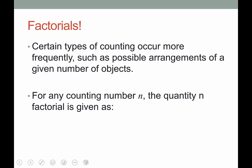So factorials. Certain types of counting occur more frequently, such as possible arrangements of a given number of objects. For example, if I had five different candy bars, how many different ways could I consume the five different candy bars where I have one right after the other?